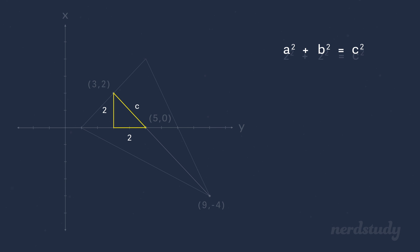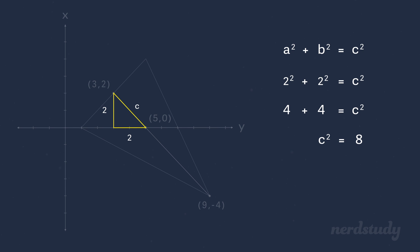We get 2 squared plus 2 squared equals c squared. Simplify this to get 4 plus 4 equals c squared, which is the same as 8 equals c squared. Switching sides and taking the square root of both sides gives us c equals square root of 8. So the length of this segment is the square root of 8.